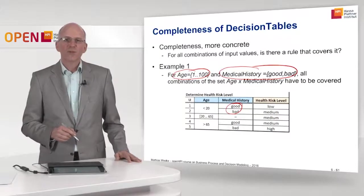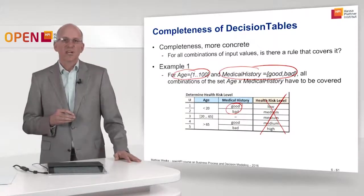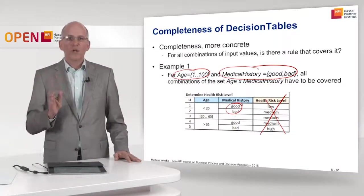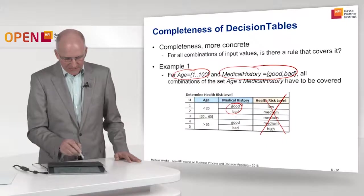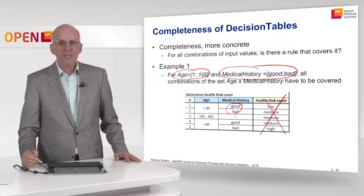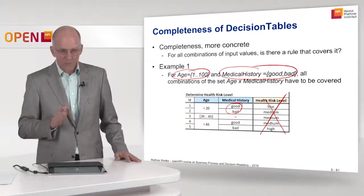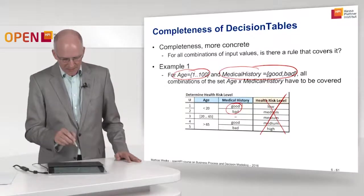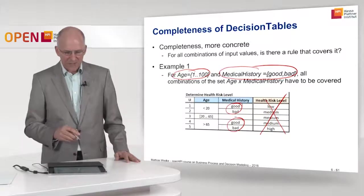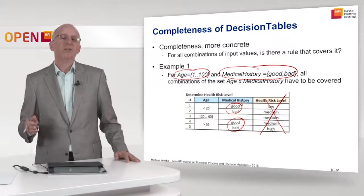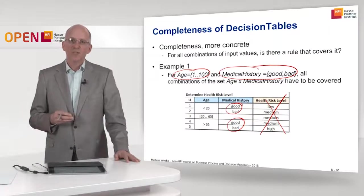When we investigate completeness, we are not looking at the output level — we are just looking at the input. We are only interested in whether all input combinations are actually covered. For all ages from 1 through 19, completeness is satisfied. Rule 3 says that for all ages between 20 and 65 inclusive, regardless of the medical history, something is defined — so between 20 and 65 we also have completeness. And for all persons with age exceeding 65, we also have good and bad covered. Therefore we can conclude that all elements of this Cartesian product are covered, and it cannot be the case that an input combination is not present in the decision table.